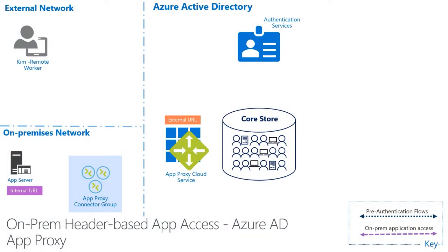Azure AD App Proxy provides remote access to on-premises applications or apps hosted on your private network, so your users can access them the same way they would access their SaaS apps. Today, we're going to see how it works when the app uses headers for authentication.